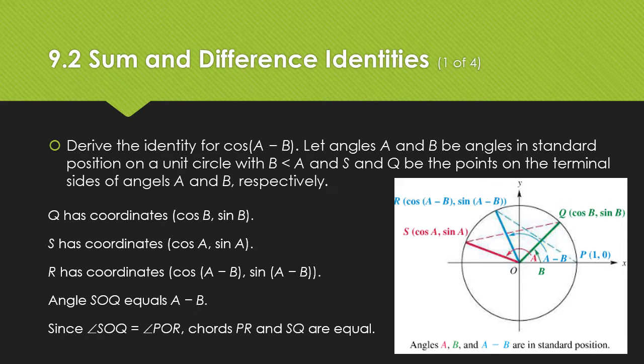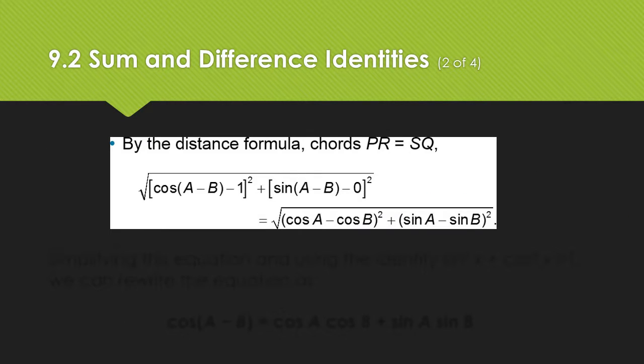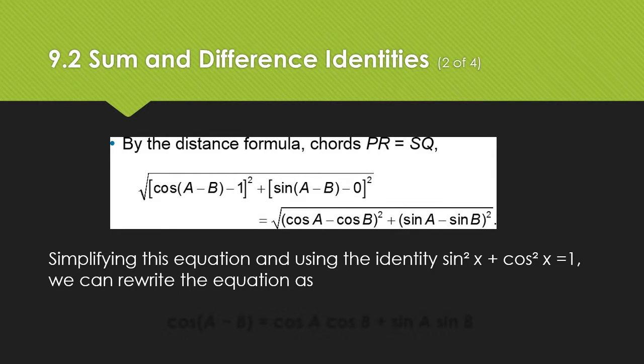Since S-O-Q and P-O-R are congruent, the chords, the straight lines between the two endpoints of those angles have to also be equal. Using the distance formula and the points, we get this. Without going into too much detail, I don't like to say, as a mathematician, then we do magic. But if you want me to, come see me and I will show you how this works out.